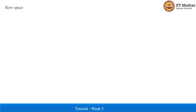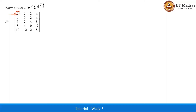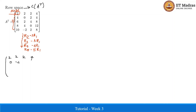Having found the column space and null space, we now find the row space of A, which equals the column space of A transpose. We reduce A transpose to its row echelon form to identify the pivot columns. After applying row reductions: R2 becomes (0, minus 4, minus 2, minus 4), R3 is (0, minus 4, minus 2, minus 4), R4 is (0, minus 4, minus 8, minus 4), and R5 is (0, minus 12, minus 8, minus 12).